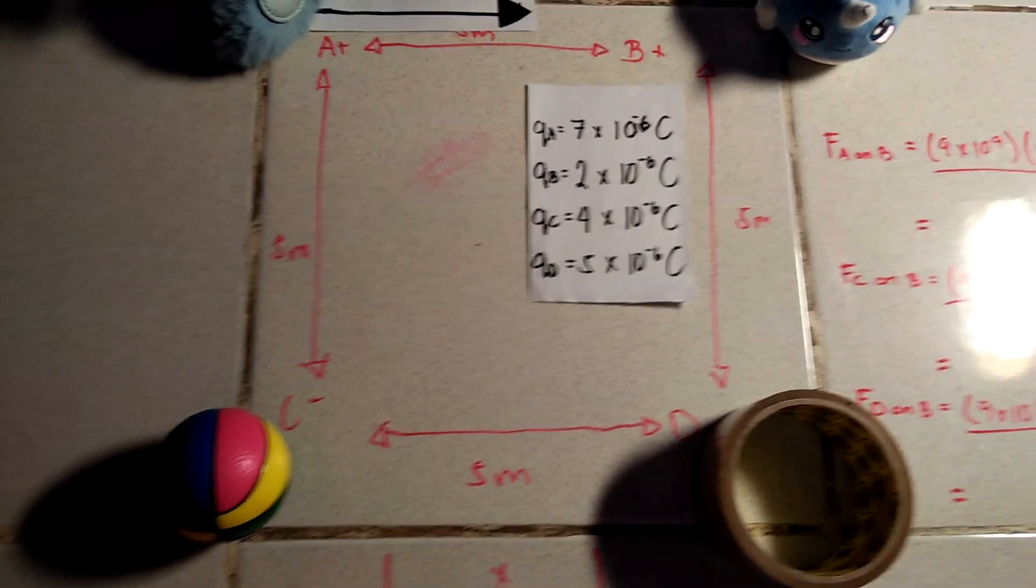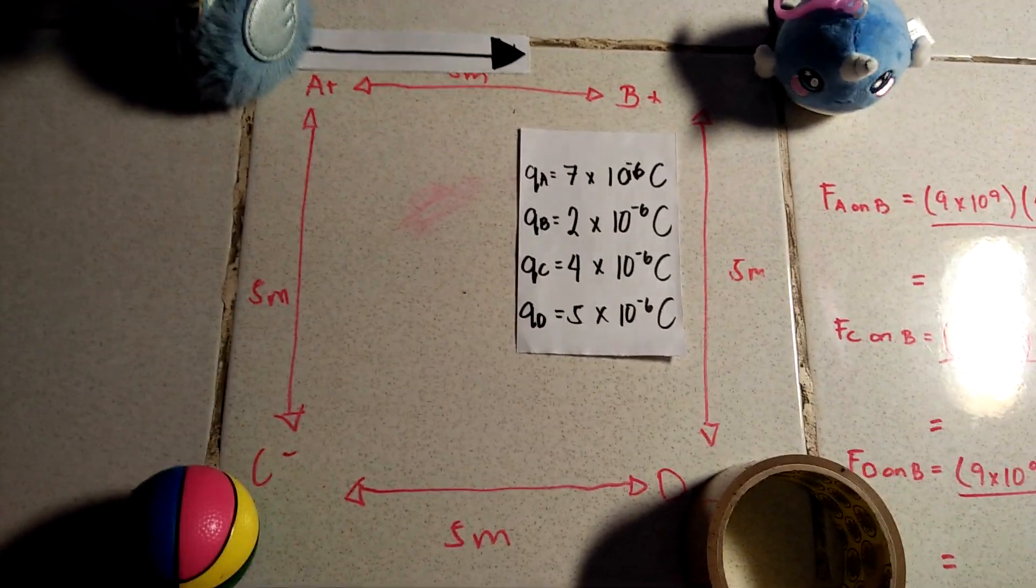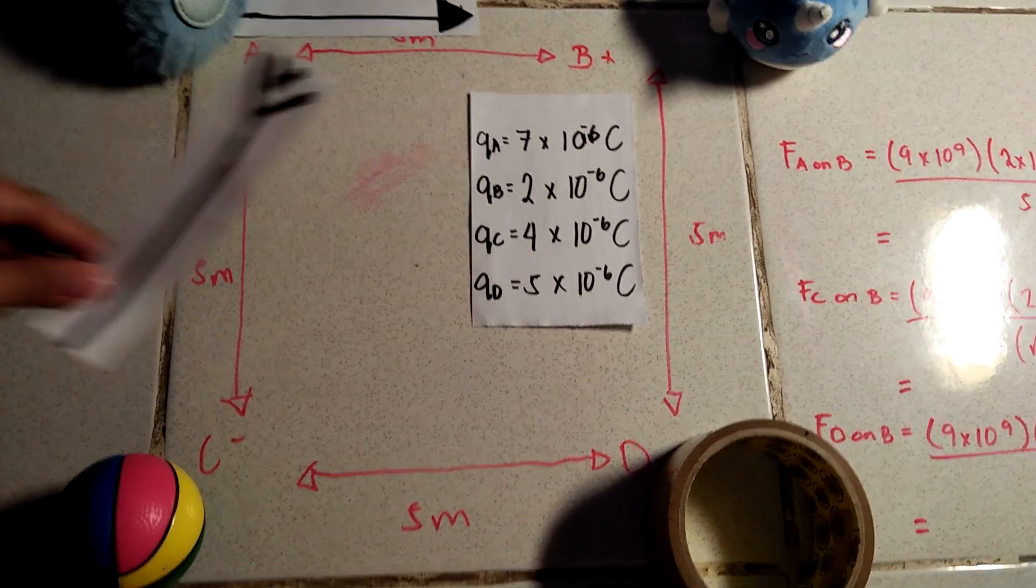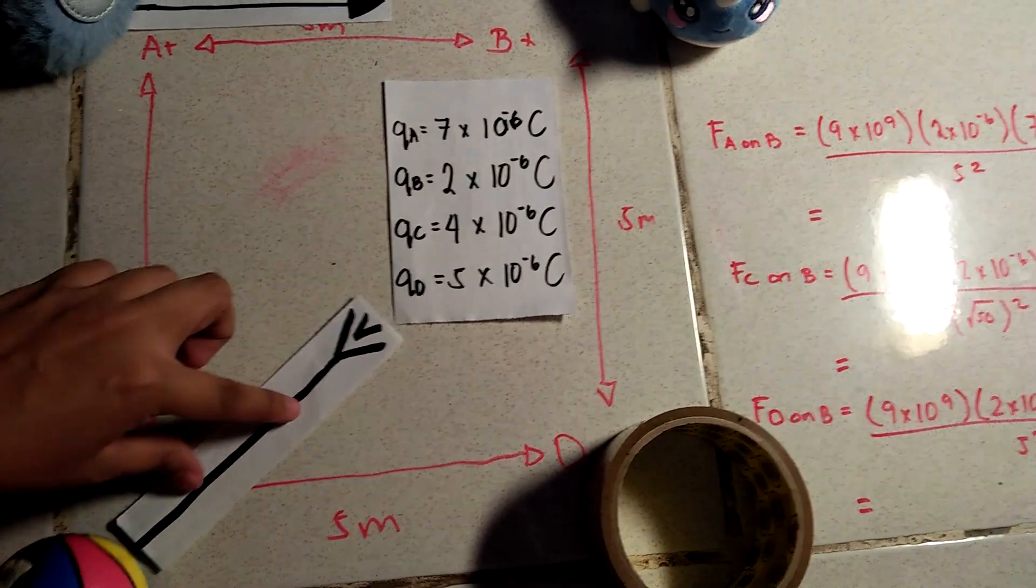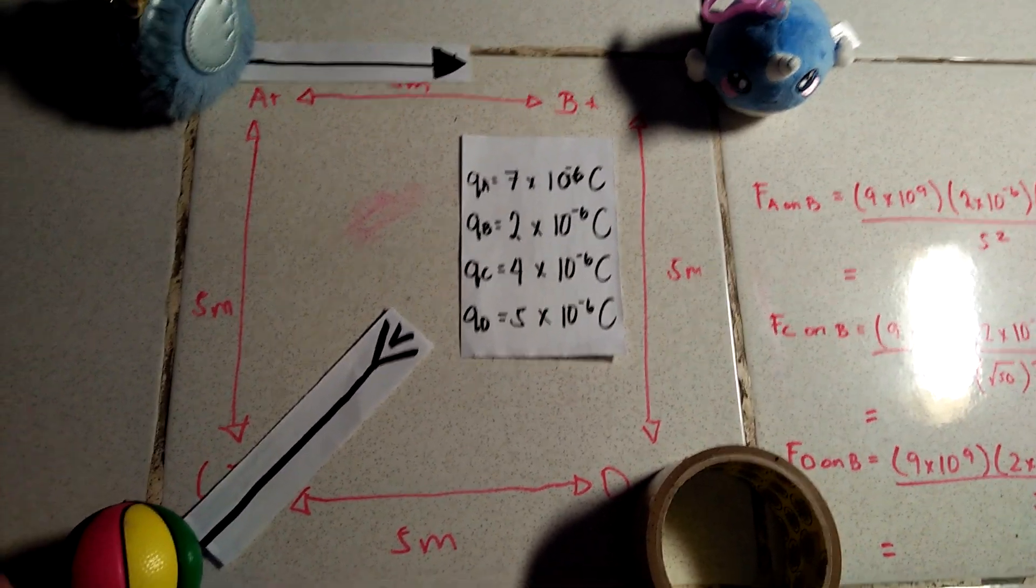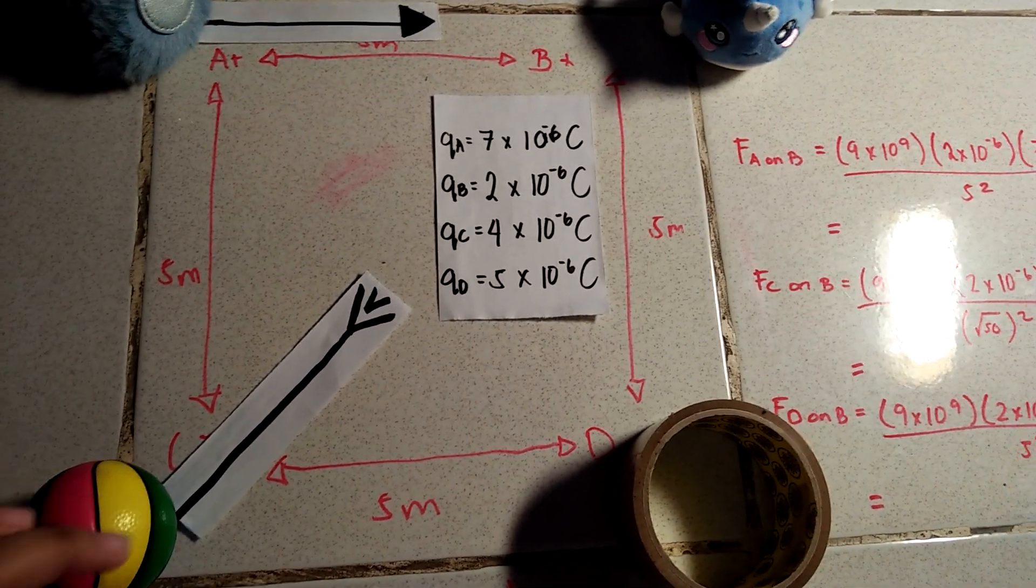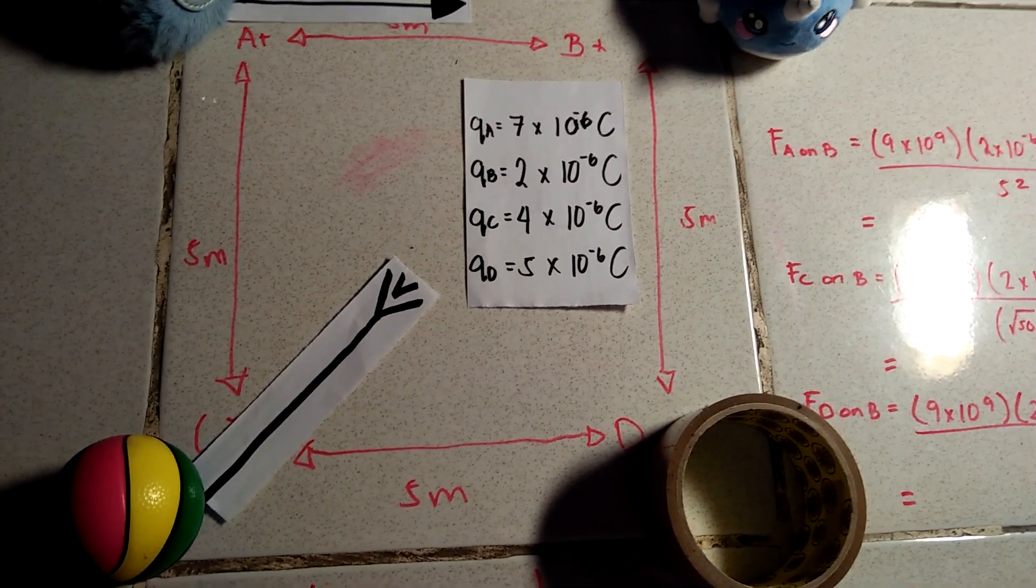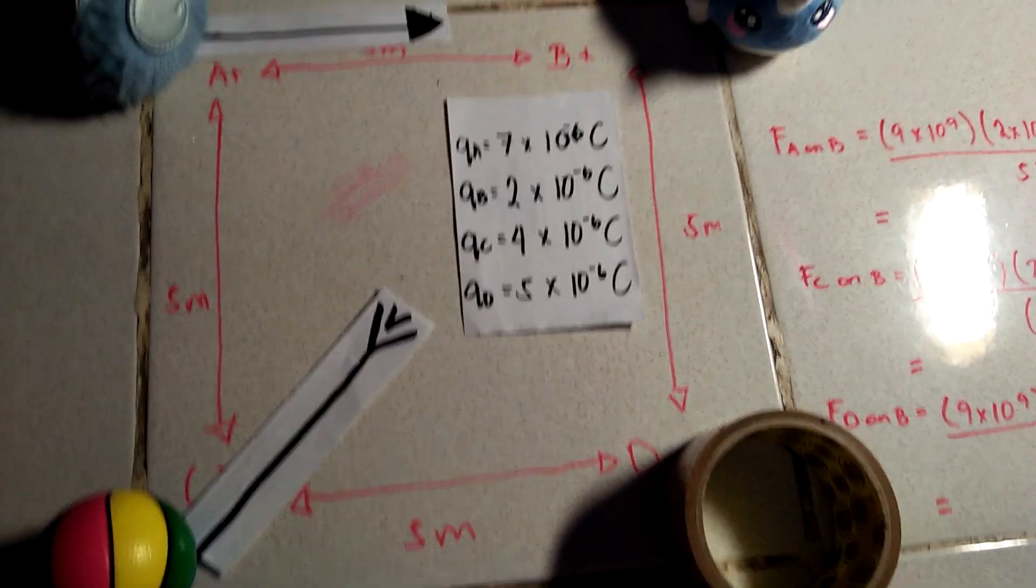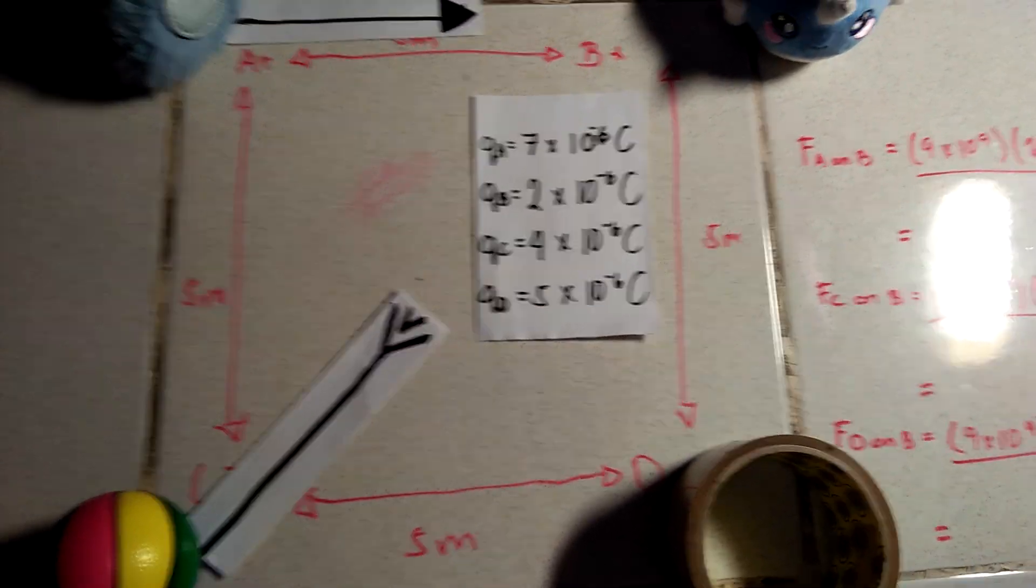And then for letter C, letter C is negative while B is positive, therefore it's an attraction force. And we can do that. So like, yeah, if you want to follow, I don't mind. This denotes an attraction force. And the reason why I placed it near to C or near to the ball is because the ball is the one exerting. And this arrow is basically attraction. It's going towards the ball.